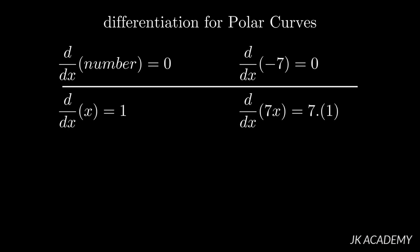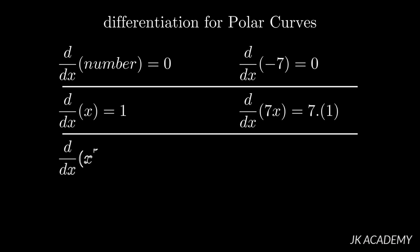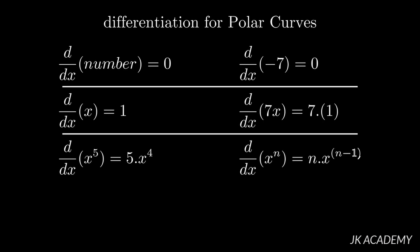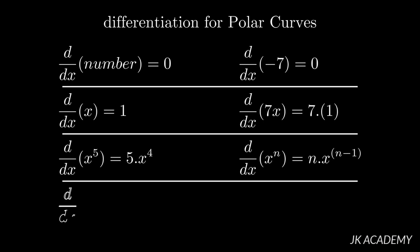The next formula: d by dx of x power 5 is equal to 5 times x power 4. In this power rule, when you see x raised to some power, the number in the power comes in front of x, and that power is reduced by one. So d by dx of x power n is n times x power n minus 1.